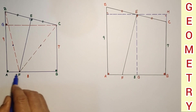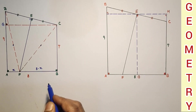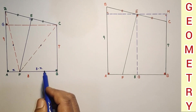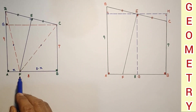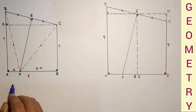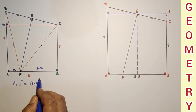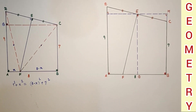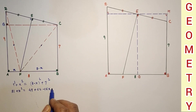Let AF = x, so FB = 8 − x. Using the Pythagorean theorem in triangle DAF: DF² = 9² + x². In triangle CBF: FC² = (8 − x)² + 7². Since DF = FC, we set 9² + x² = (8 − x)² + 7², which expands to 81 + x² = 49 + 64 − 16x + x².